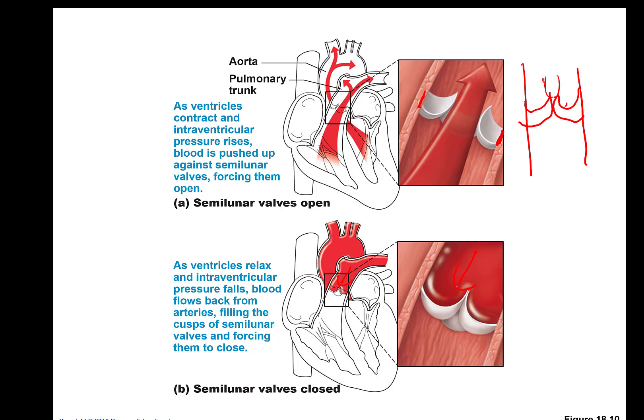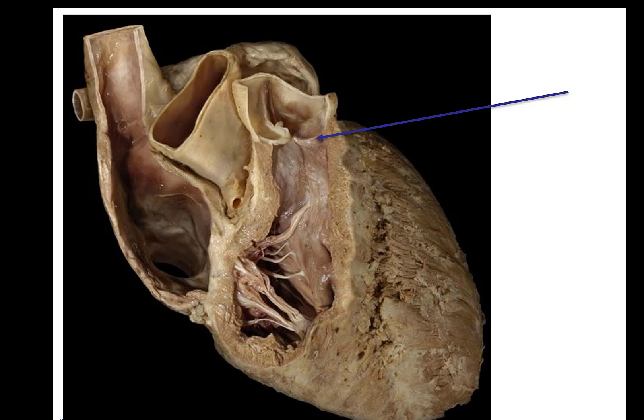Semilunar valves always have three cusps, the tricuspid valve has three, and the bicuspid has two. However, in anatomy there's always variability — there have been instances where people have three flaps for the bicuspid, or even one, which is quite unusual. That's normal variation. Here's a real human heart viewed from the top. The superior vena cava is visible here and the aorta here. There are no chordae tendineae visible, and if you guessed this is the pulmonary semilunar valve, you are correct.